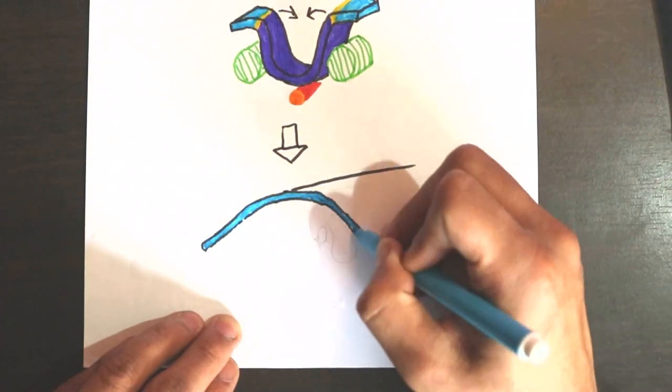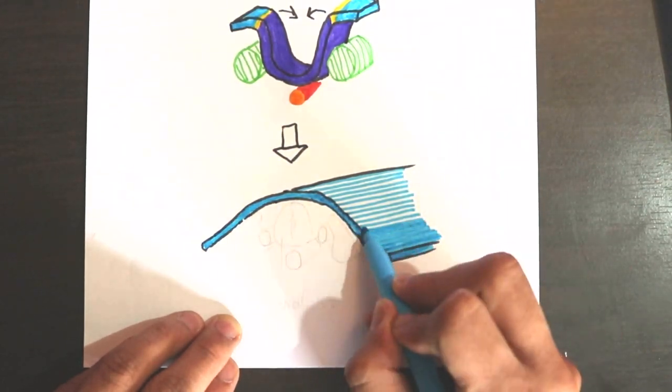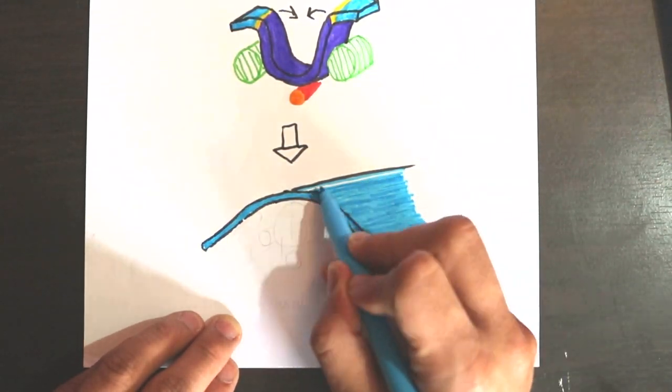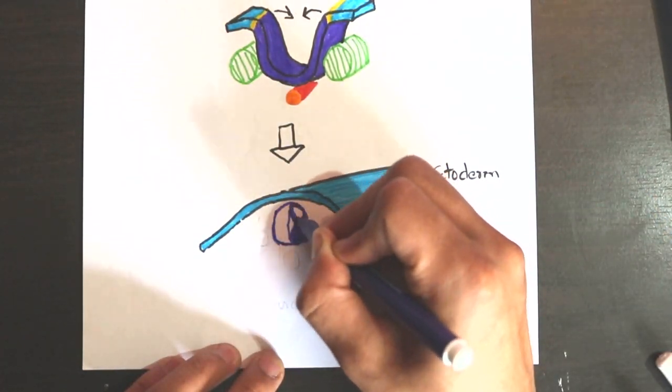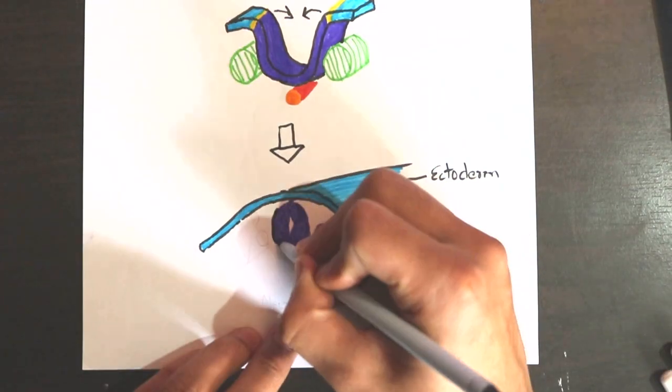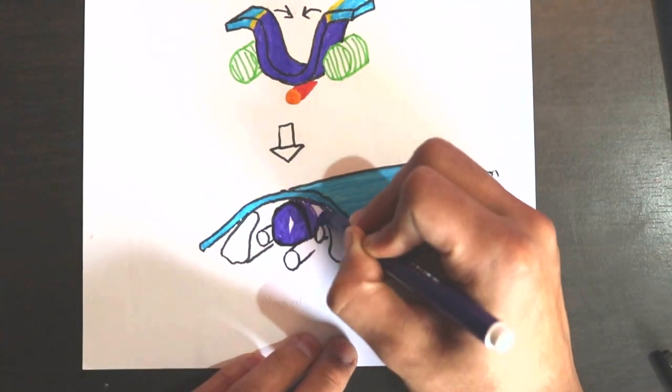They fuse to form the neural tube, which is the precursor to the brain and spinal cord. The formation of the neural tube is known as neurulation and is achieved by the end of the fourth week of development.